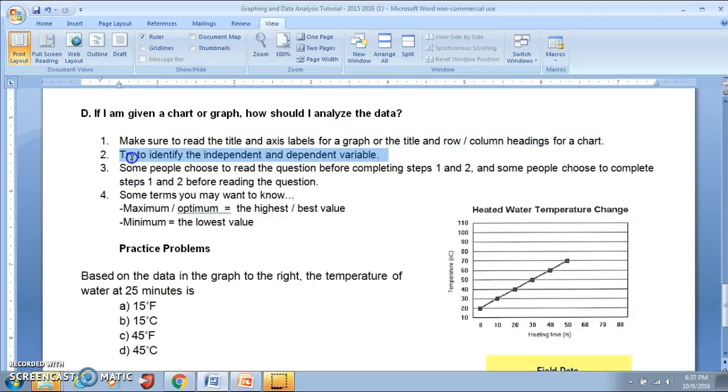Something you also might want to do is to try to identify your independent and dependent variable. Now for step 3, you're reading the question. Some people choose to do that before steps 1 and 2, and some people choose to do it after 1 and 2. It doesn't really matter. And when you're analyzing a chart or graph, some terms that you'll probably need to know is maximum or optimum means the highest or best value, and minimum means the lowest value.